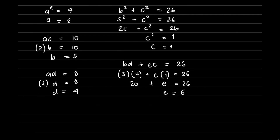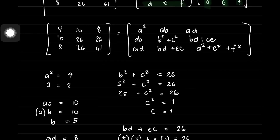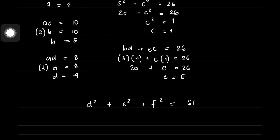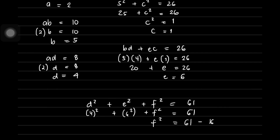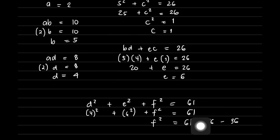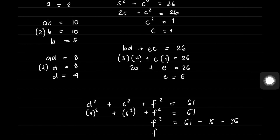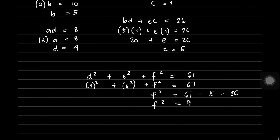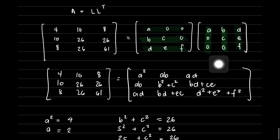Finally, solving for F: D² + E² + F² = 61. Substituting D=4 and E=6: 4² + 6² + F² = 61, so 16 + 36 + F² = 61. Transposing gives F² = 61 − 16 − 36 = 9, therefore F = 3. Now we have all values A=2, B=5, C=1, D=4, E=6, F=3, and we can solve for the values of X.